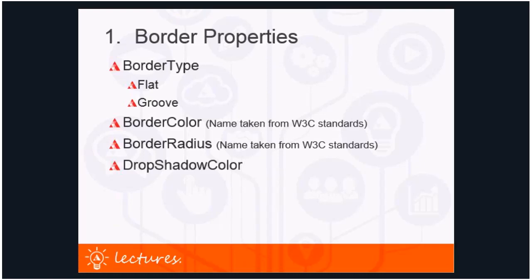For the border properties, you can give your entity or area frame different types of borders. A flat border is one pixel in size and falls inside the area frame — fields painted at the inner edge of an area frame will override the border. By default the border is dark gray. You can customize a flat border with the border color and border radius properties. The groove border shows an edge border with a width of two pixels and also falls inside the area frame.